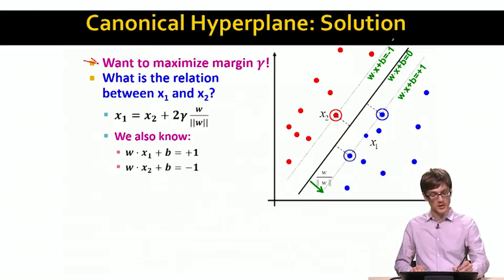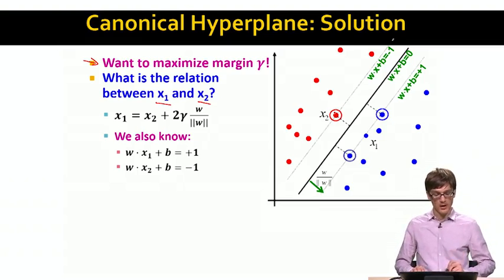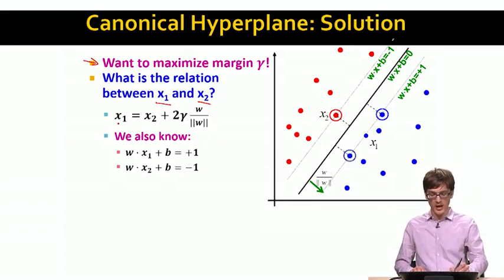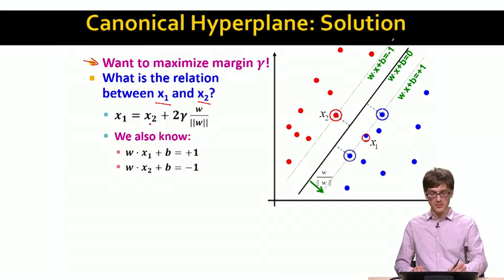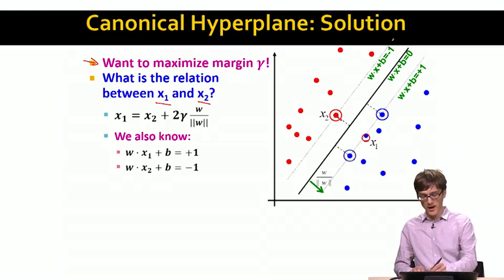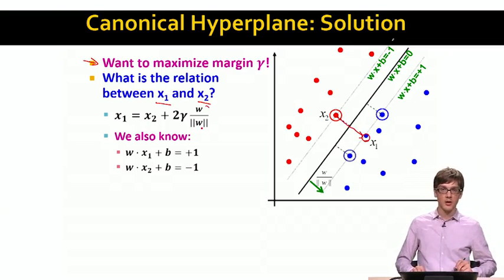So, the goal is still to maximize the margin. Now, the question is, what is the relationship between data point x₁, which is here on the margin on the other side, and data point x₂, which is our red data point here? What do we know is the following? We know that x₁, the value of the data point here, is simply x₂ plus twice the margin times the normalized version of the vector w.